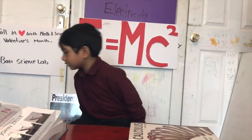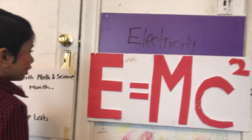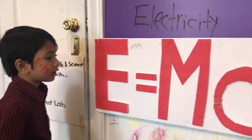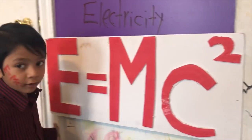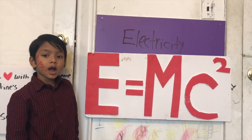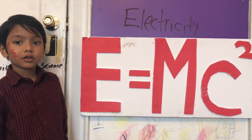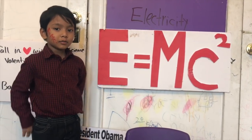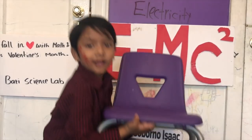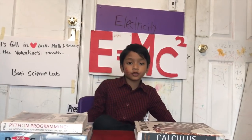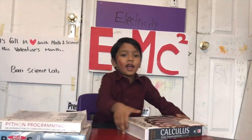Relativity shows that all things change when you approach the speed of light: time gets slower, space contracts, and you get heavier. The faster you move, the heavier you get. The energy of motion has turned into making you heavier.